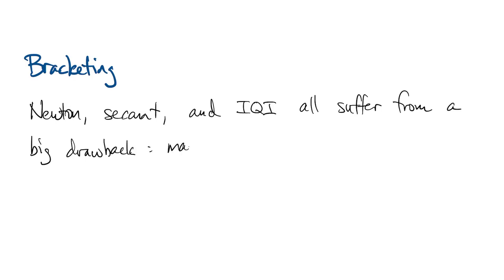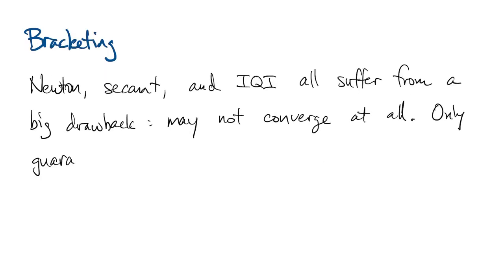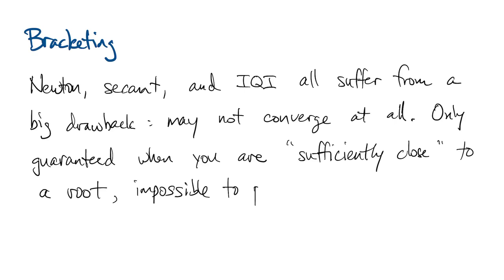Now, all these methods, Newton, secant, and the inverse quadratic iteration, all suffer from one big drawback, which we've pointed out since the beginning. They may not converge at all, depending on your starting point. You can get guarantees in theory. You can show that there is some neighborhood of the root that guarantees convergence. But in practice, you can almost never find where that neighborhood is.